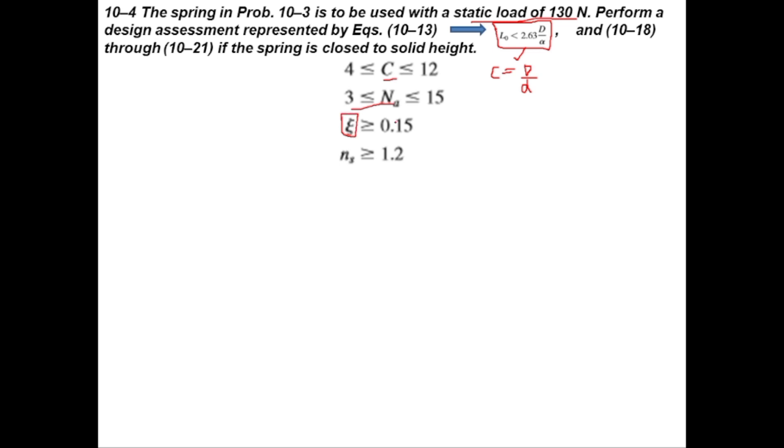The value of zeta should be greater than or equal to 0.15. The equation zeta times F plus F applied equals F solid can be used to find the value of zeta. The design factor should be 1.2 or greater. To design a spring, all of the above equations should be satisfied, otherwise the design will not be safe.